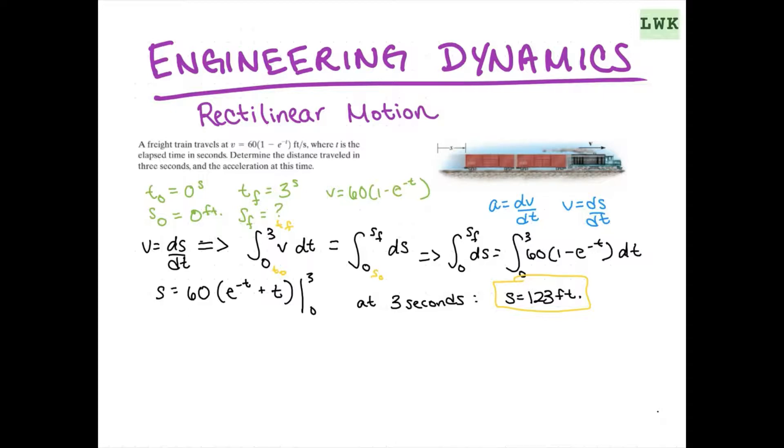So, again, let's go back to what we know. So, a equals dv/dt. And let's just start by putting in what we know for v. So, d/dt of 60(1 minus e to the negative t). It's going to give us simplify. That's going to solve out to be 60(e to the negative t) equals a.